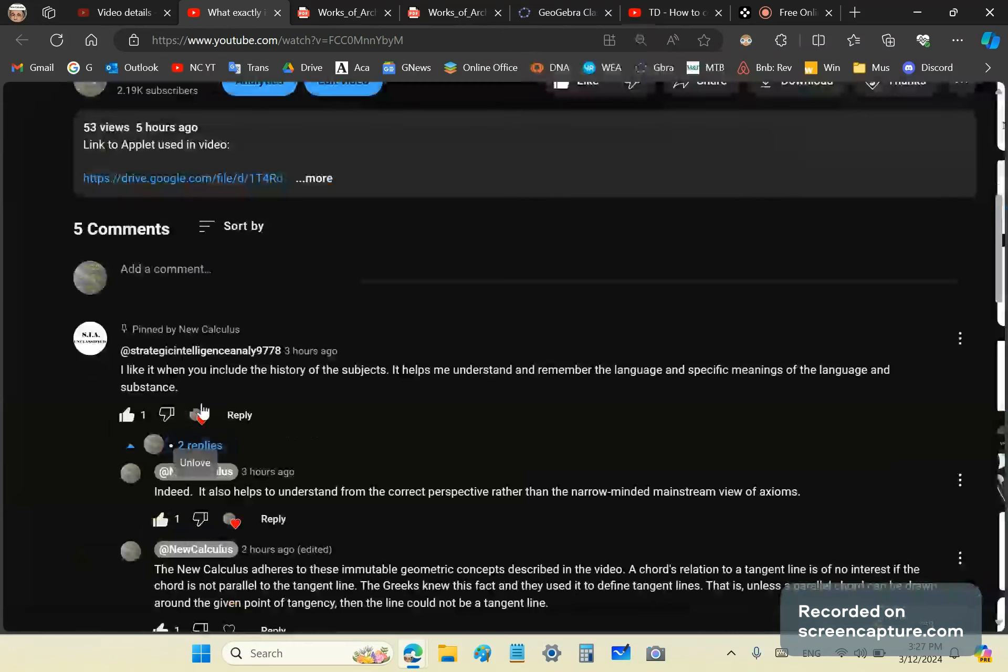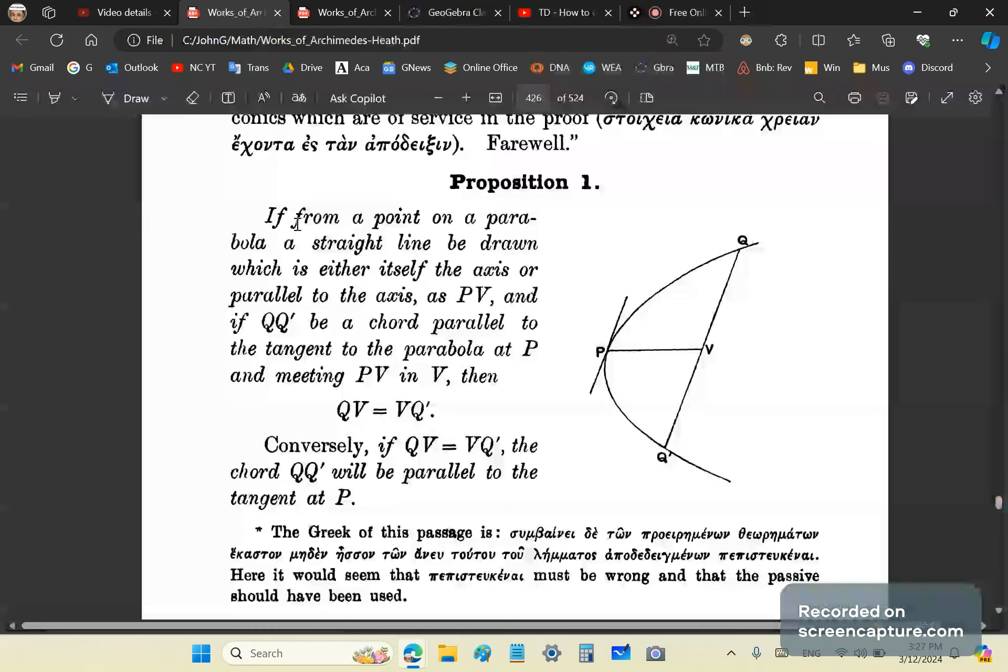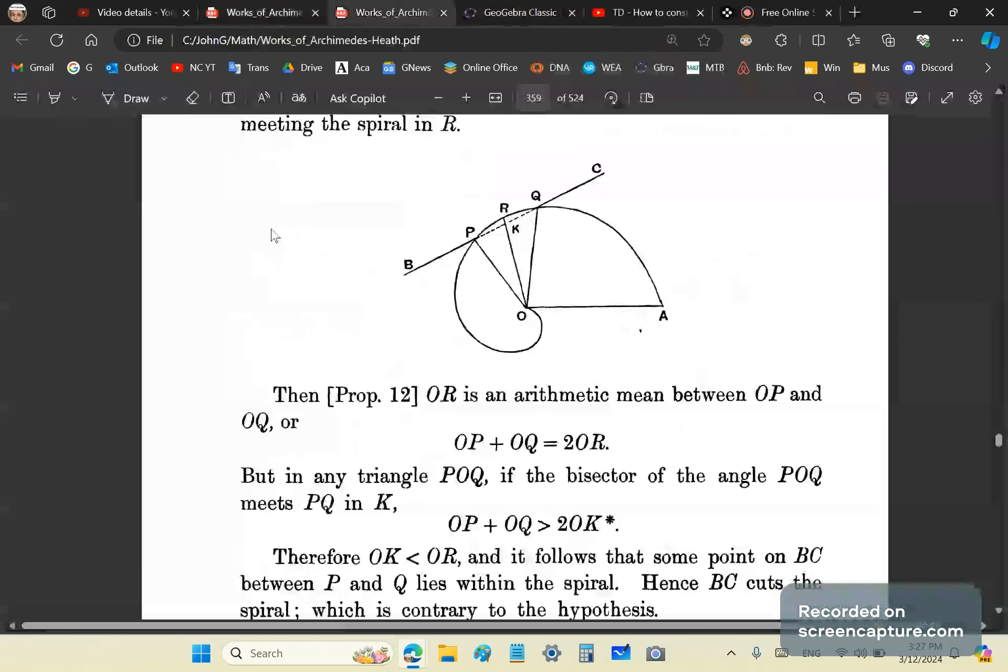This is a video on tangents and the Archimedean spiral. I talked about that in this video and also in the previous two videos. What you see here is how Archimedes used tangent lines to parabolas and here how he used them to spirals.